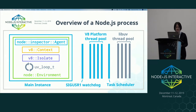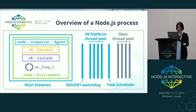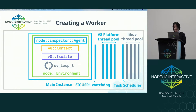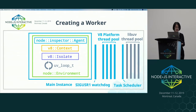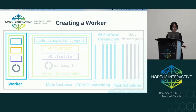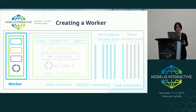There is also a SIGUSR1 watchdog thread for handling the signal that users send to Node to make the inspector start listening on the port. There are also one thread pool for V8 and its task scheduler thread, and one thread pool for LibUV to serve asynchronous file system operations. Starting from Node 10, you can spawn worker instances in addition to the main instance in one Node process. Spawning a worker basically creates a new thread with the worker instance inside, sharing all of the thread pools in the process.